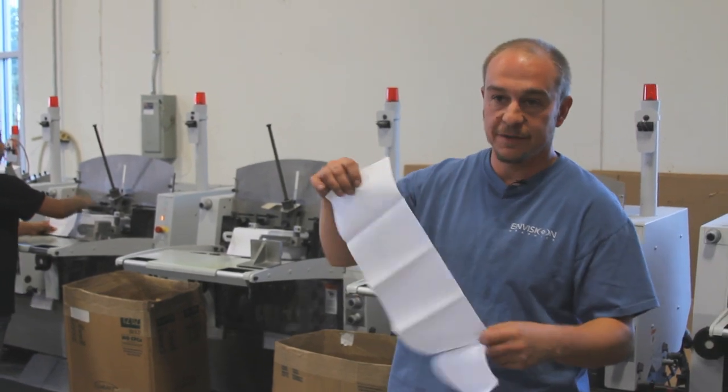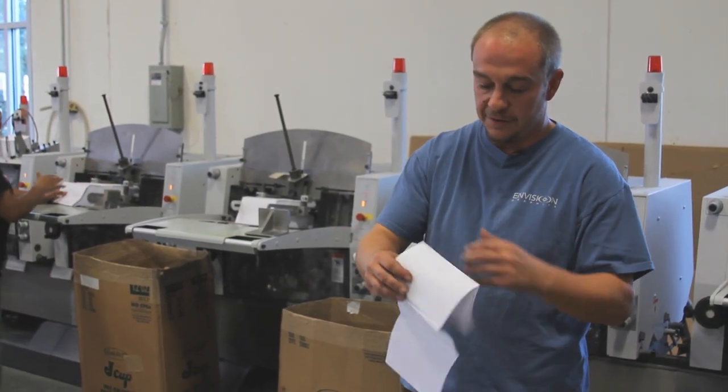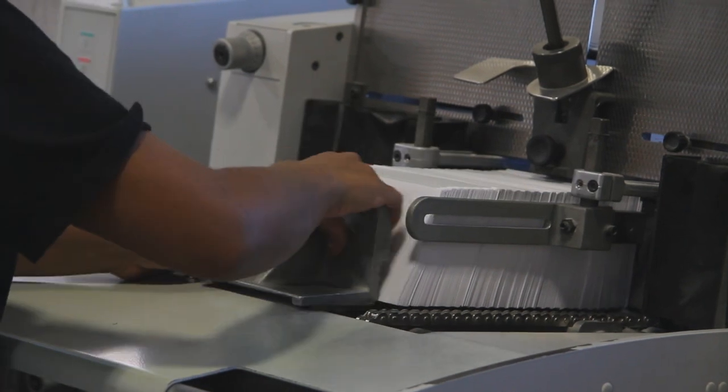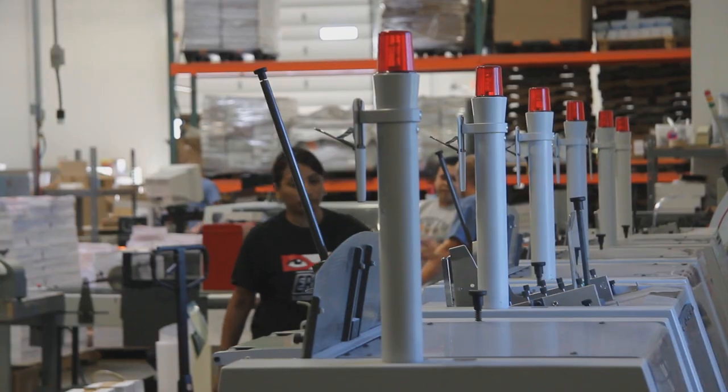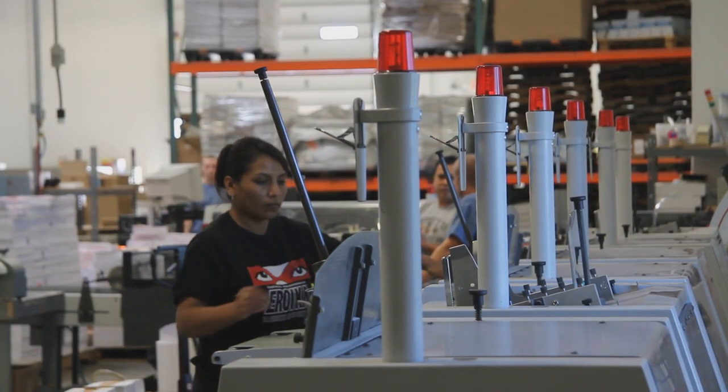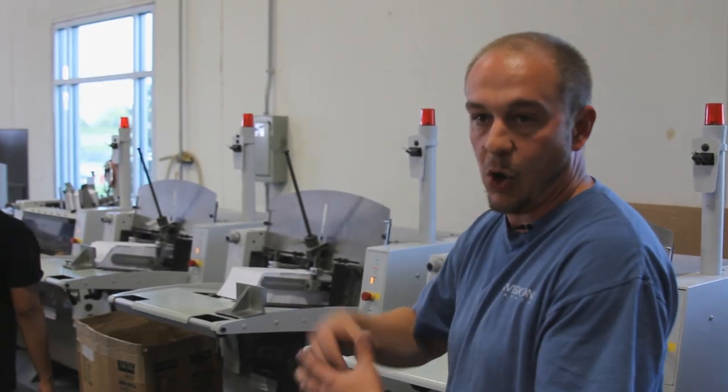So this is a 12 page signature, it's folded down, these are all individual feeders, so what it does is she loads them in and it drops all the signatures individually and collates them into one book.